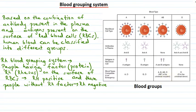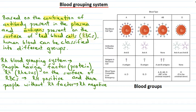Let's quickly revise what we covered today. WBCs — white blood cells — produce special proteins called antibodies, and these antibodies protect us from foreign harmful substances. There are other proteins called antigens which are responsible for the production of these antibodies. A specific antigen evokes the generation of a specific kind of antibody. Based on the combination of antibodies present in plasma and antigens on the surface of RBCs, human blood can be classified into different groups.